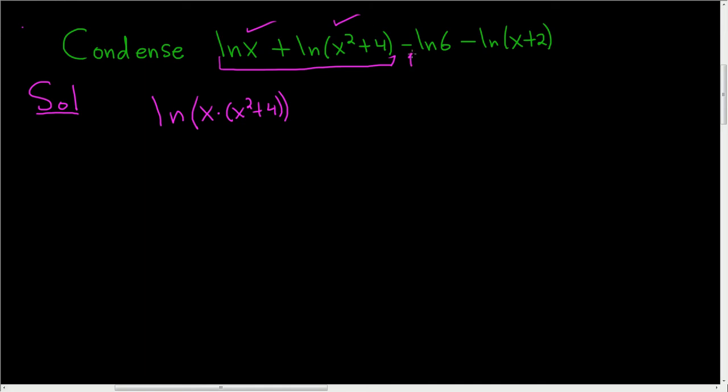Here we have two minus signs. That means two quotient rules. So one thing that you can do to avoid that is factor out a negative 1. So this is negative 1 times the natural log of 6 plus the natural log of x plus 2.